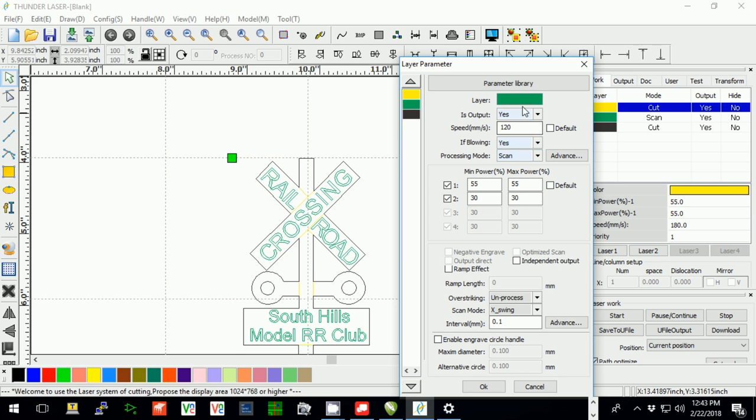The green is the lettering. It's going to be done a little more slowly at 120 millimeters per second, same power level, but it's not going to be cut. It's going to be scanned, which means that the cutter is going to go back and forth. I'll show you that in a minute.